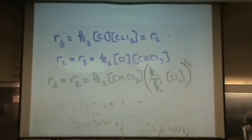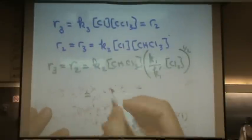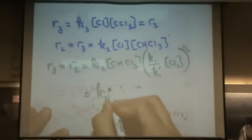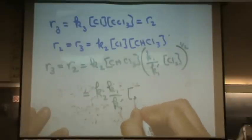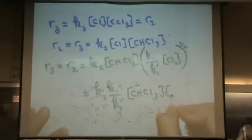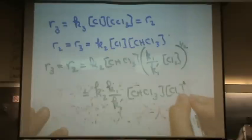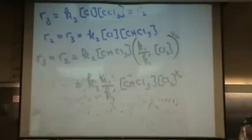I'm pretty much done. I'll just simplify. This equals K2 K1 over K1 prime CHCl3 Cl2 to the one half. I'm done.